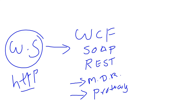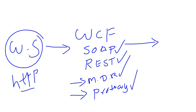WCF supports SOAP, REST, multiple data representation patterns, and multiple protocols. So when WCF supports so many things, why do we need to move to Web API? Basically, WCF supports a large number of things, so if you want to use just one feature out of all of these, you have to do a lot of configuration. You have to configure which protocol you are using, which data representation you are using, and there are many data contracting configurations to specify when writing WCF code.